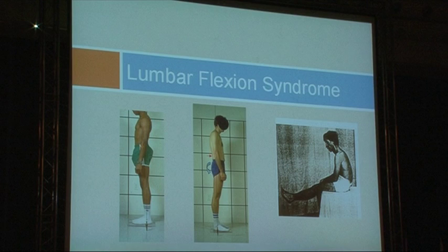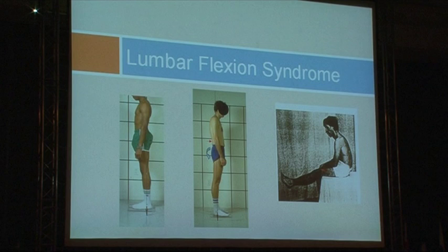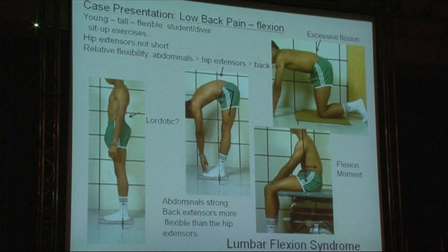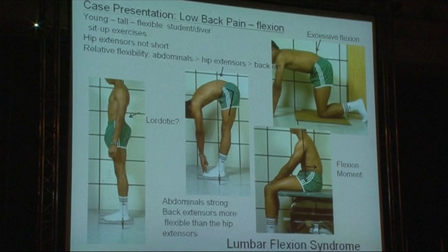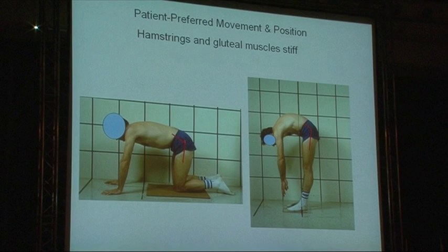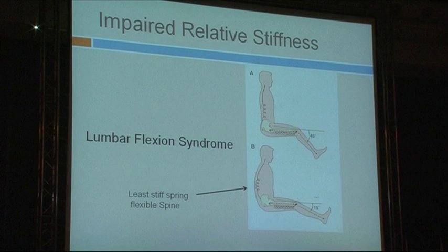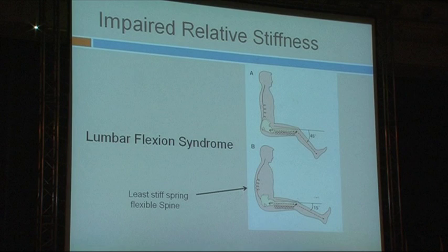Another individual with a lumbar extension syndrome has her symptoms eliminated by stopping the extension of her back. A third case: a young man with very short hip flexors in lumbar extension who could only extend his back because his pelvis doesn't posteriorly tilt. Lumbar flexion syndromes involve individuals who usually have overdeveloped abdominals. An ultramarathonist has a flat back and sits in lumbar flexion. A competitive diver has excessive lumbar flexion when bending over even though his hips flex well, and sits with his spine in lumbar flexion contributed to by overdevelopment of his abdominal muscles. In these individuals, their hip muscles are stiffer than their back muscles, so they flex in the back instead of the hips.